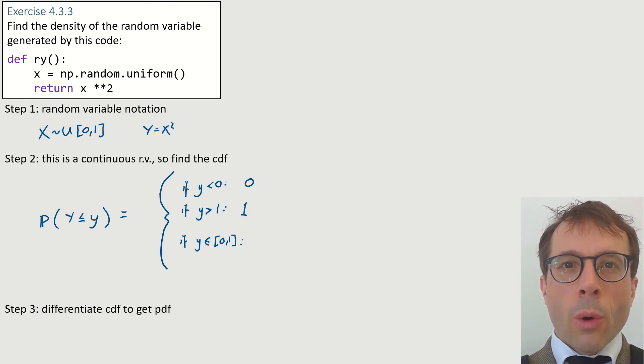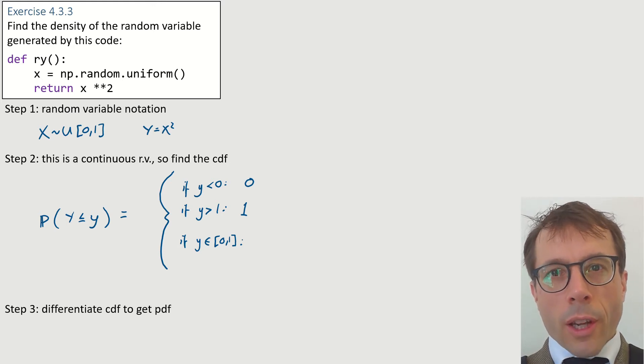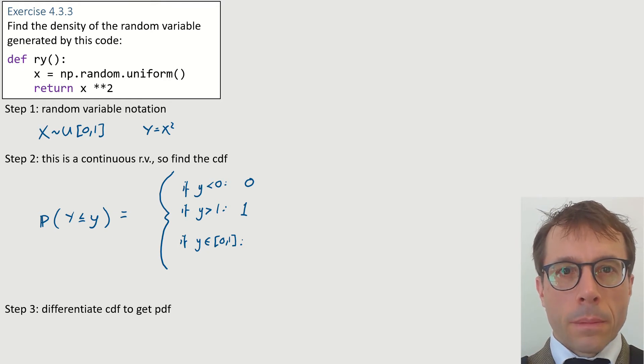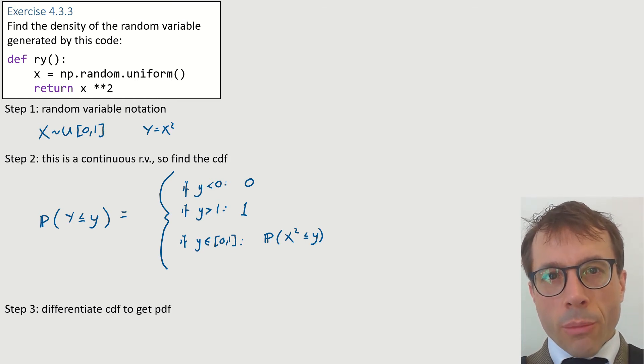And here, just looking at the code, we can see it's impossible to return a value smaller than zero, and it always returns a value less than or equal to one. And that's why these first two cases are as they are. It's only the last case, the case where little y is in the range zero to one, that we need to do some work. My strategy is to rewrite probability expressions in terms of simple standard random variables. Here, y is defined in terms of x, and x is uniform, so let's rewrite in terms of x.